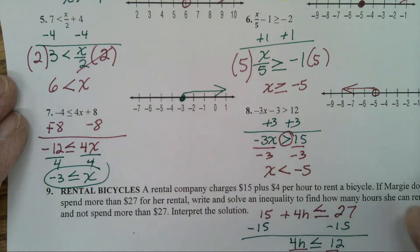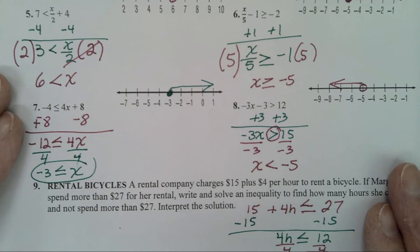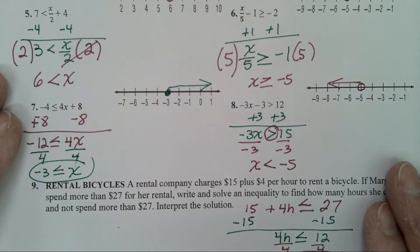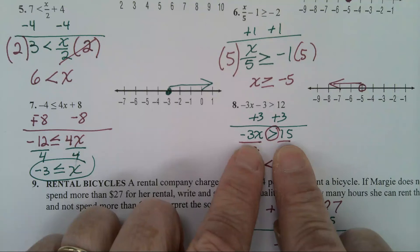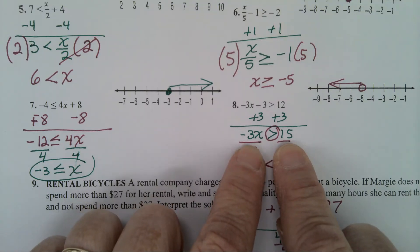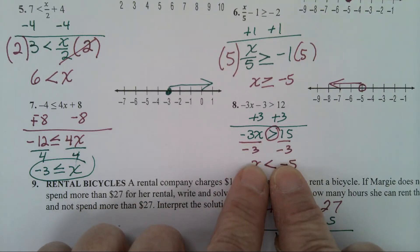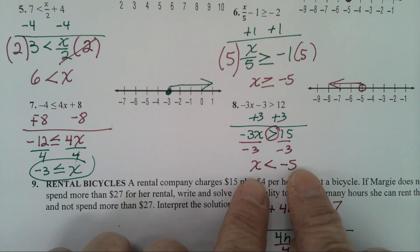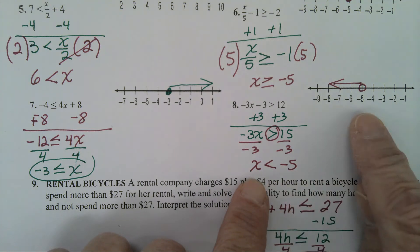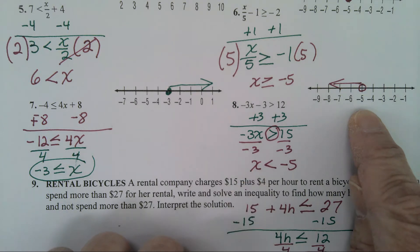Number 8. We add 3 to both sides. You now have negative 3x is greater than 15. Divide both sides by a negative 3 — that will cause your inequality sign to flip. You now have x is less than negative 5. Open circle on the negative 5 going to the left.